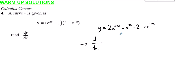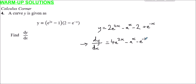Now differentiate term by term. For 2e^(2x): the coefficient of x, which is 2, drops to the front and multiplies the existing coefficient 2, giving 4e^(2x). For minus e^x: e^x differentiates to itself, so this stays as minus e^x. The constant term minus 2 disappears. For e^(minus x): the minus 1 comes to the front, giving minus e^(minus x). So dy/dx equals 4e^(2x) minus e^x minus e^(minus x). That completes the warm-up exercise.